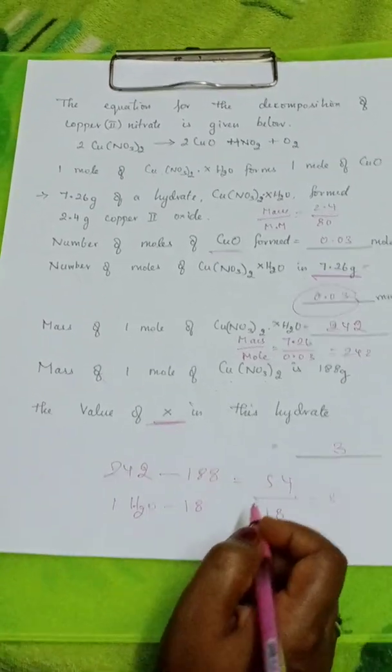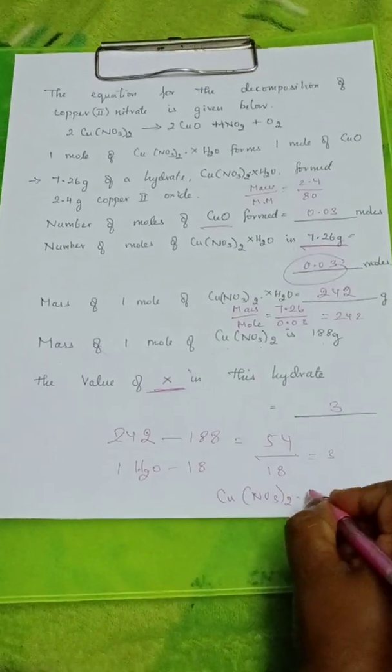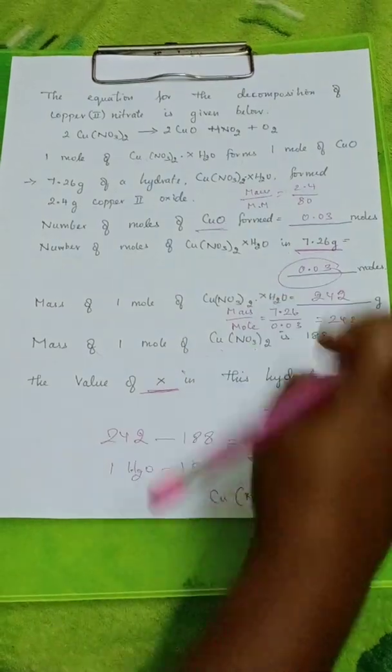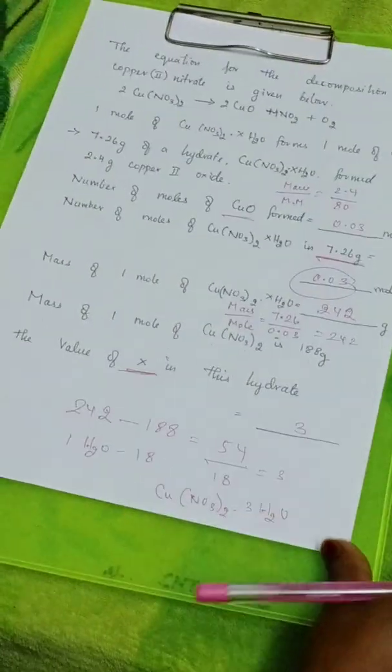What is the formula then? Copper nitrate, Cu(NO3)2 · 3H2O. This will give you 242. Thank you for watching, children. Bye-bye.